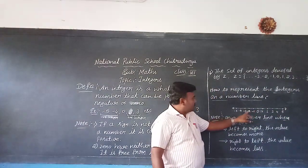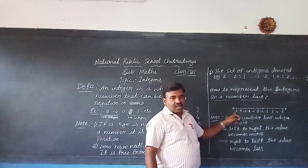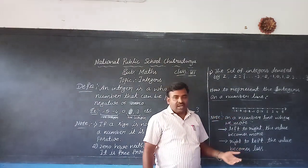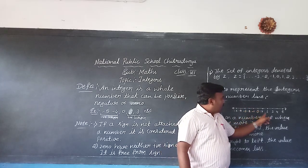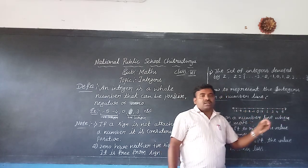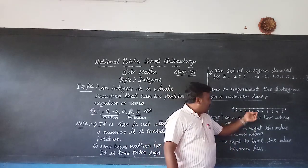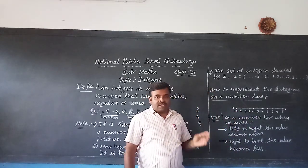And next one, minus 1, minus 2, minus 3, minus 4, minus 5. These are called the negative integers. And one more thing observe here students. Zero right side, we return the positive integers. And zero left side, we return the negative integers.